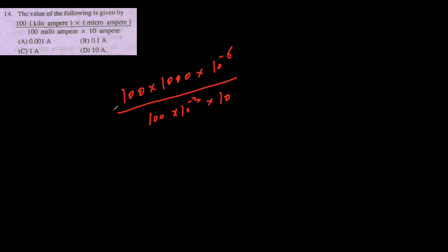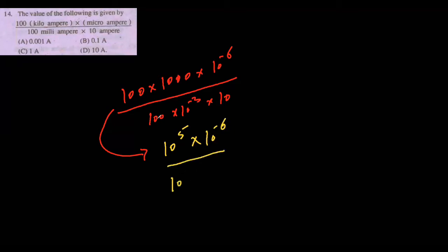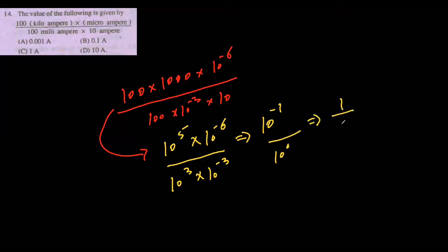We need to convert to scientific notation. So we get 10 to the power 5 times 10 to the power minus 6 in the numerator. In multiplication the powers are added, giving 5 minus 6 equals minus 1. The denominator is 10 to the power 3 times 10 to the power minus 3, giving 10 to the power 0, which equals 1. So the result is 10 to the power minus 1 divided by 1, equal to 0.1. Option B is the correct answer, that is 0.1 ampere.